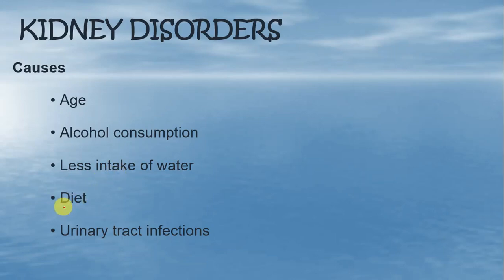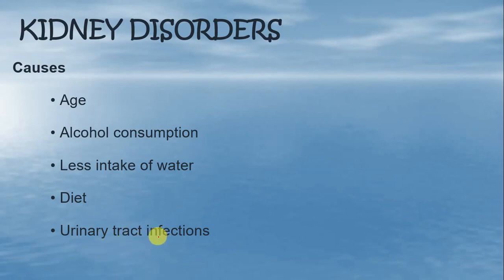Number four is the diet — sometimes अगर diet के अंदर ज्यादा green vegetables ली जाएं, बहुत salts use किये जाएं, या Vitamin C and D की consumption ज्यादा ली जाए, तो उसकी वजह से भी kidney में stone बनने के chances ज्यादा होते हैं. Then last is the urinary tract infections — urinary tract के अंदर infections होने की वजह से, चाहे वो viral हों या bacterial, वो भी kidney में stone बनने का result बनते हैं.